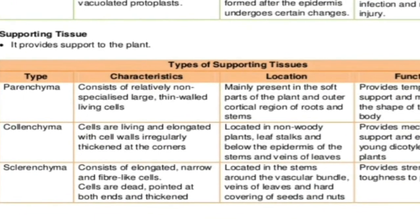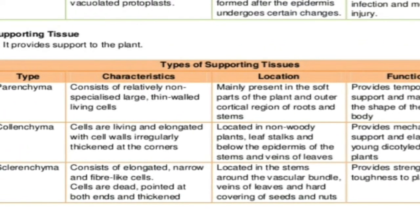The first supportive tissue is parenchyma. Parenchyma cells are isodiametric — almost the same shape — and can be spherical or elongated. They are thin-walled with no hardening in their walls. They are present in the soft parts of the plant, such as the cortical region of roots and stems. The function of parenchyma is to support and maintain the shape, due to the absence of a rigid cell wall.